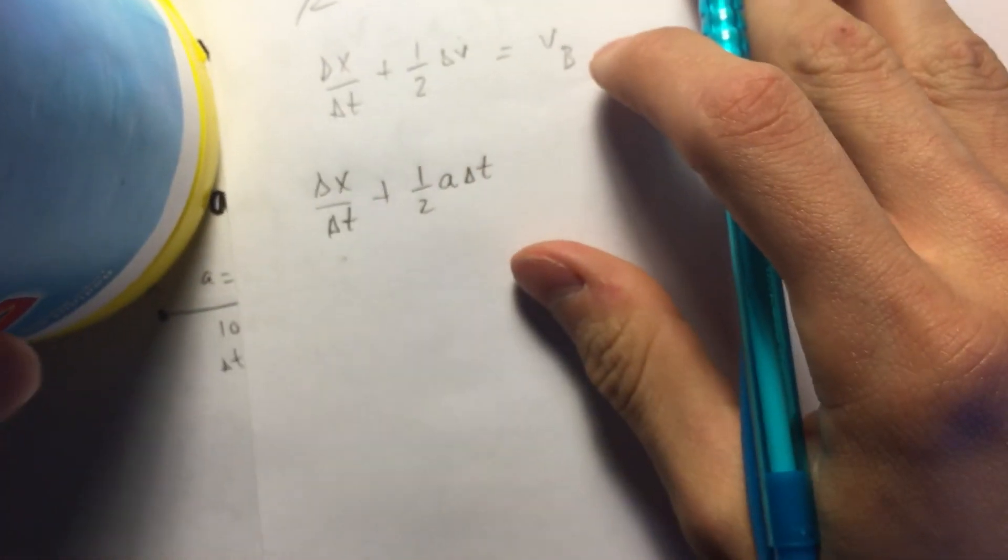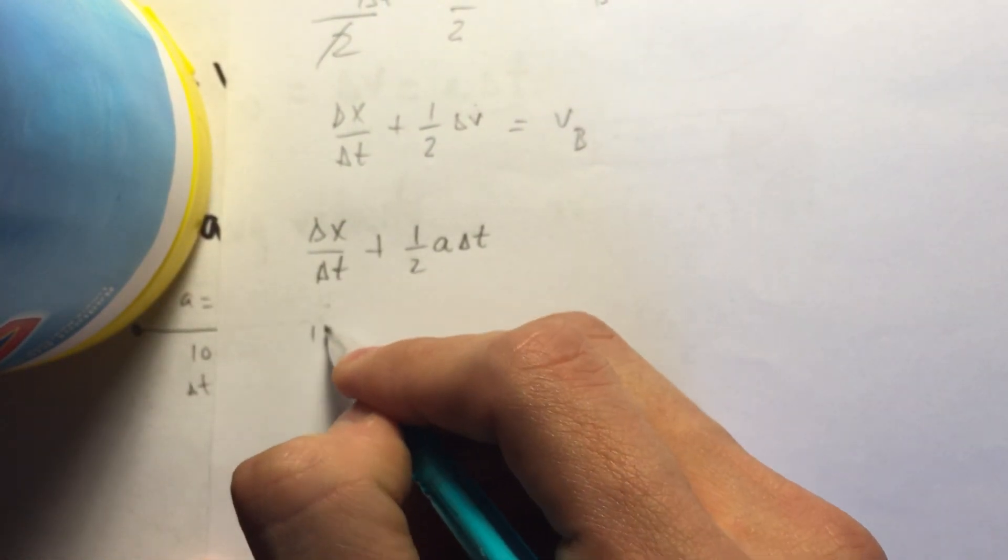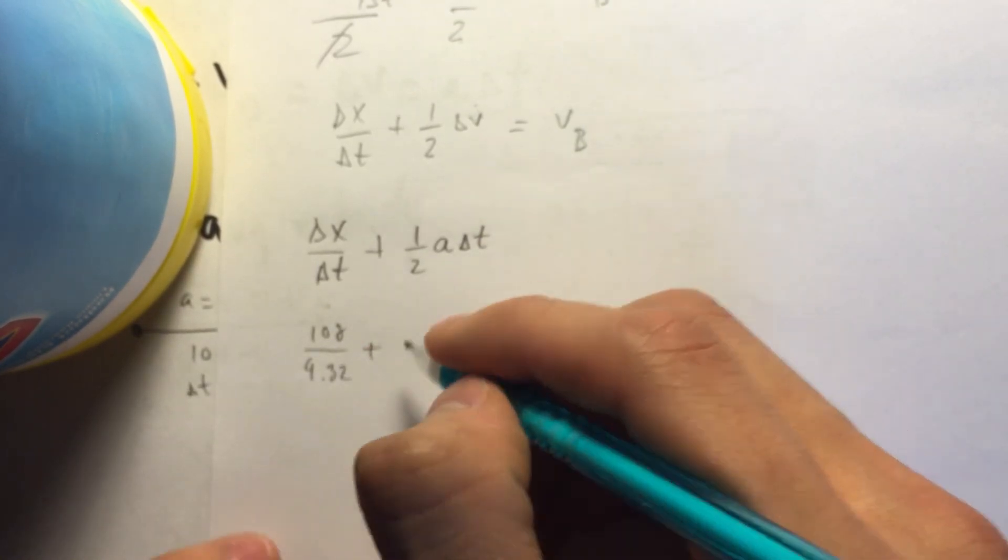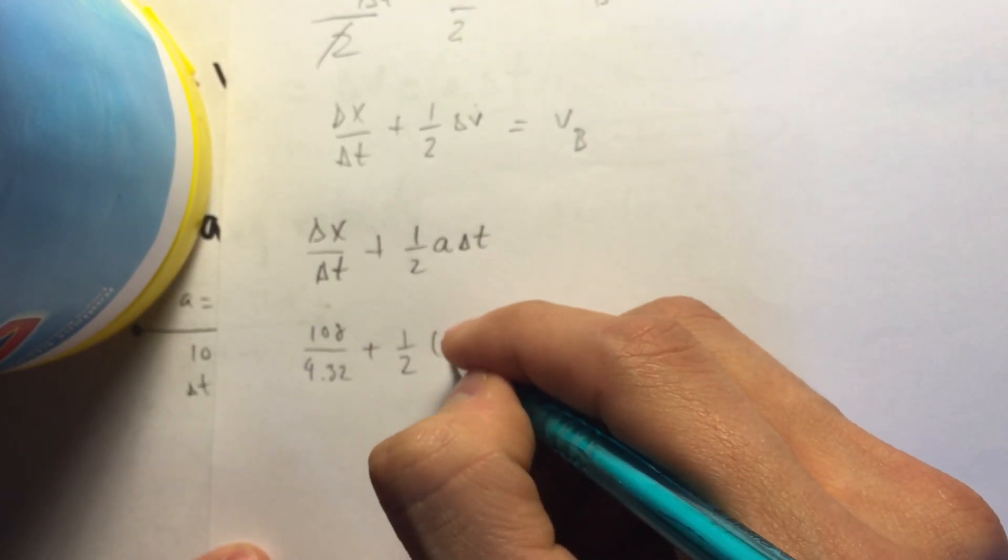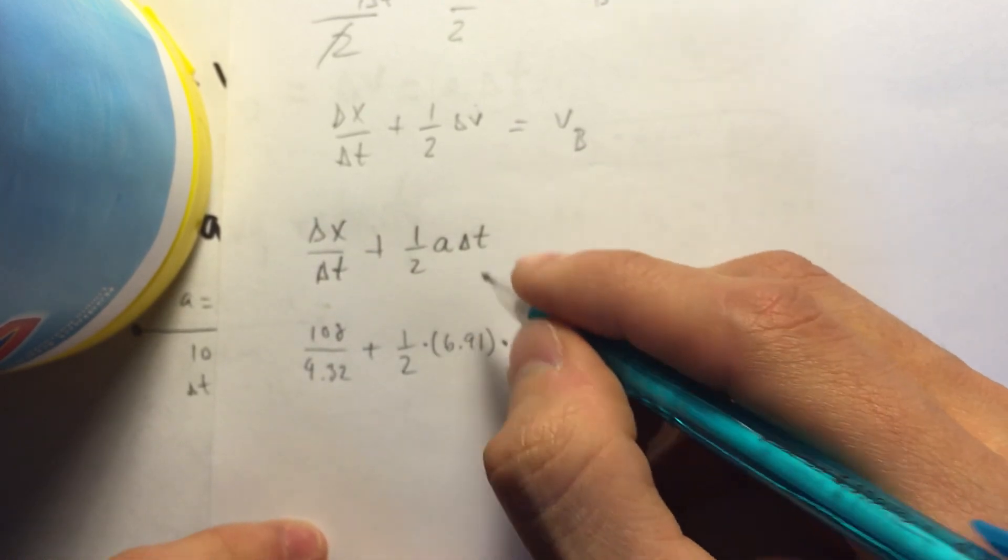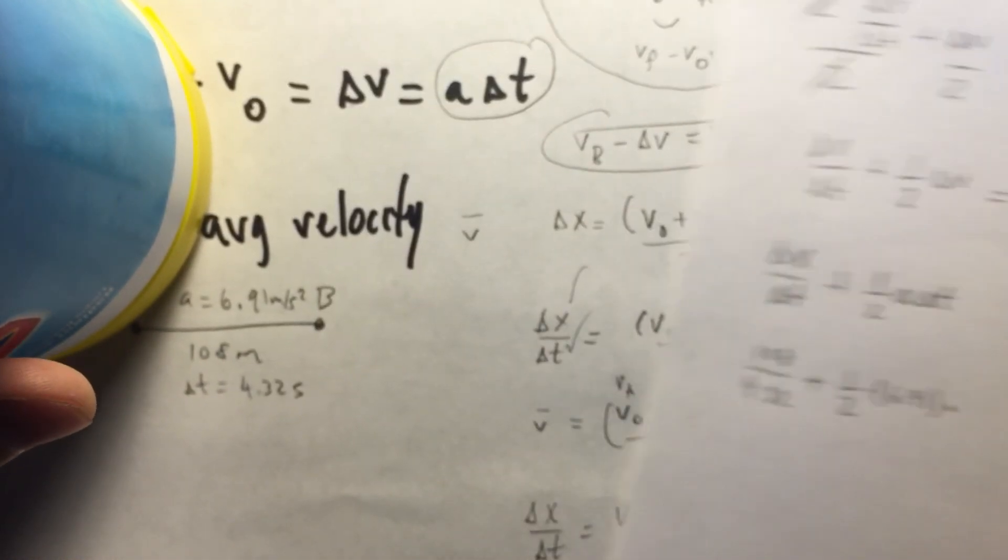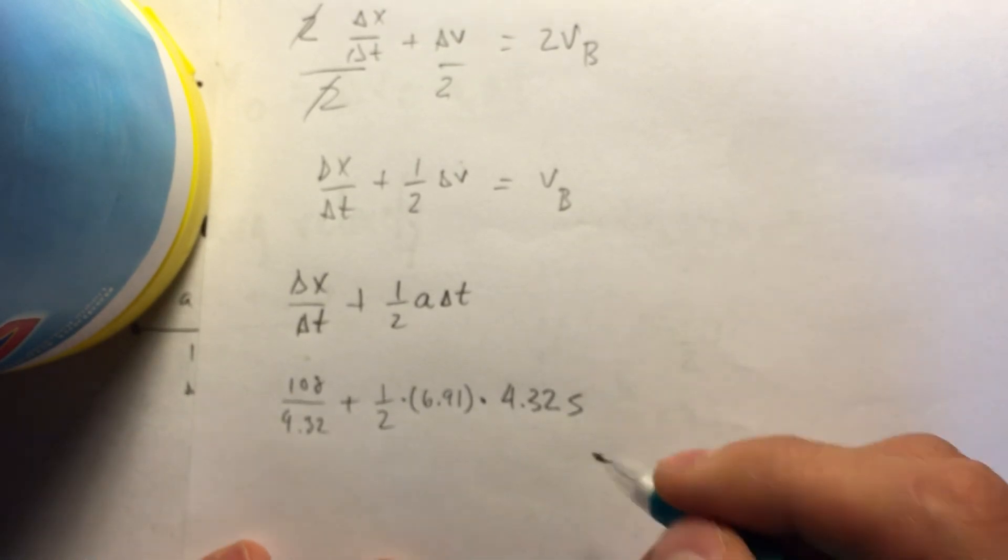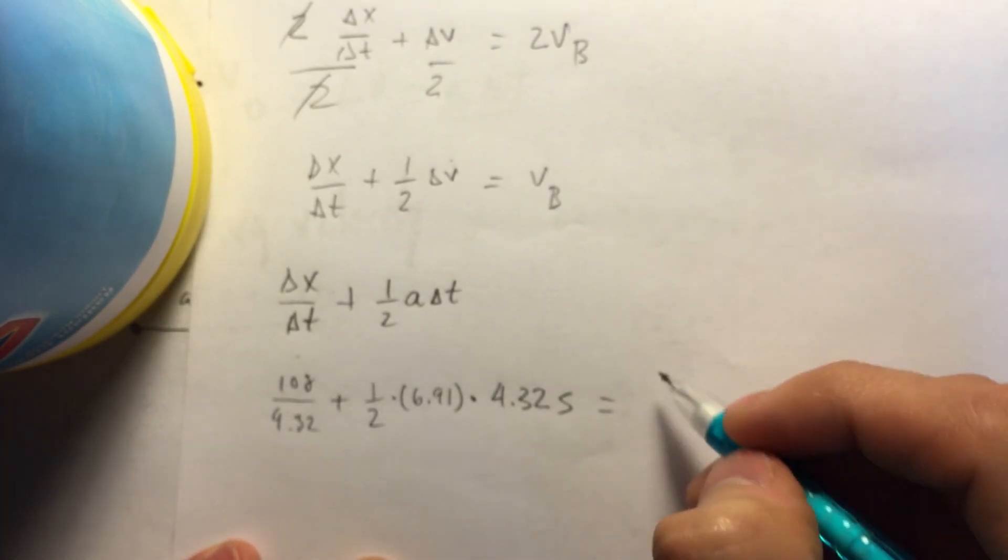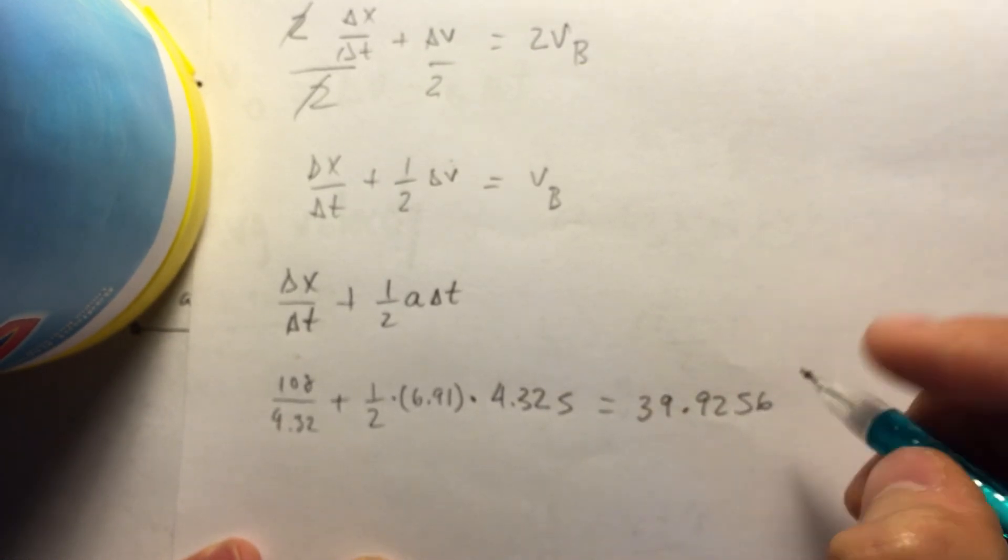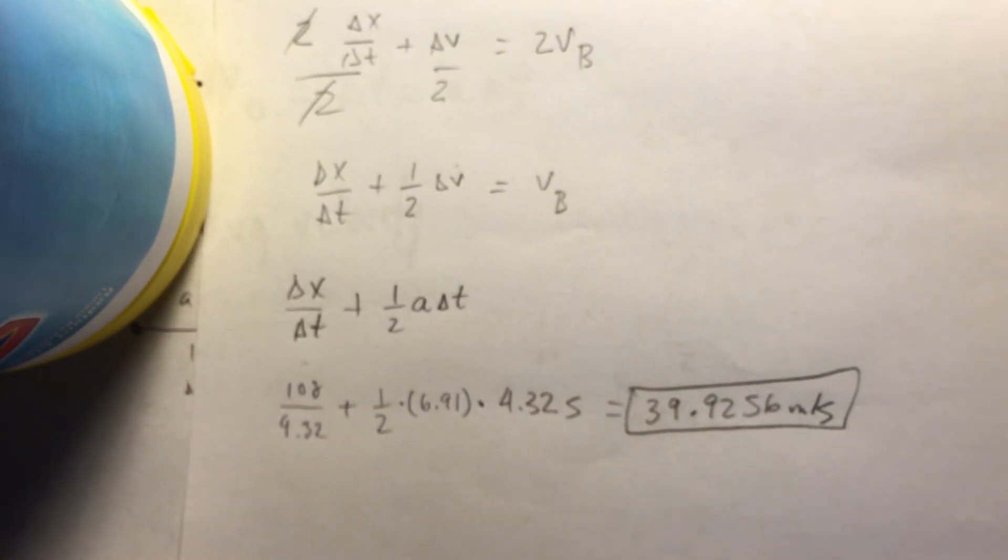So with this in mind, we had given a distance of 108 divided by 4.32 seconds plus 1 half, an acceleration of 6.91, times the time, same time of 4.32 seconds. And this gives us an answer of 39.9256 meters per second. And there you guys have it.